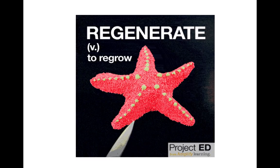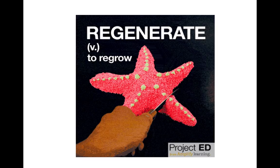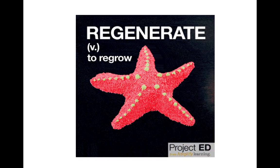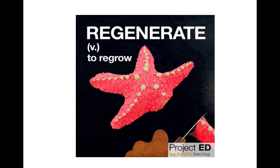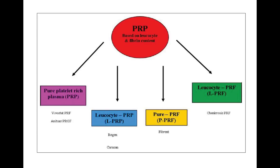Now it's all about regeneration. For a necrotic open apex case, the best treatment option is regeneration — regrowth. For this regeneration procedure, you need to learn about PRP — platelet rich plasma — which can be categorized into four types: pure platelet rich plasma (PRP), leukocyte platelet rich plasma (LPRP), pure platelet rich fibrin (PPRF), and leukocyte fibrin rich fibrin.